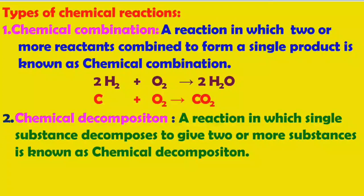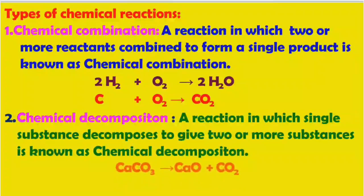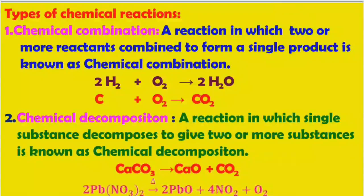The second type is chemical decomposition. A reaction in which a single substance decomposes to give two or more substances is known as chemical decomposition. For example, calcium carbonate decomposes to form calcium oxide and carbon dioxide. In another example, lead nitrate on heating decomposes to form lead oxide, nitrogen dioxide, and oxygen — here one substance decomposes to form three substances.